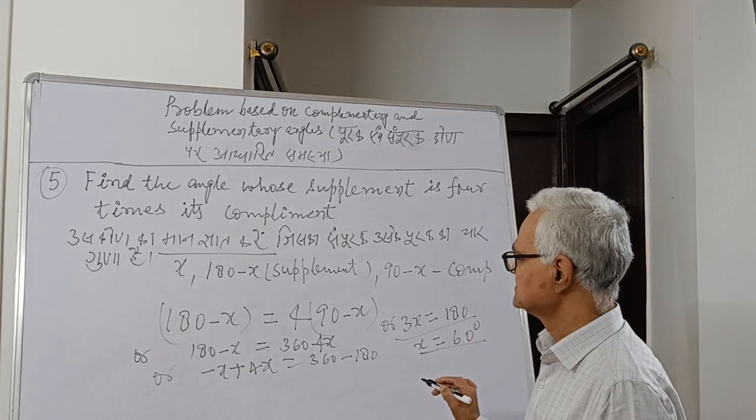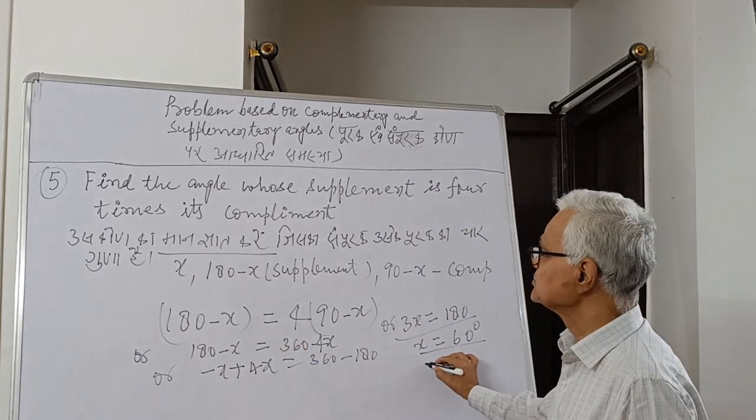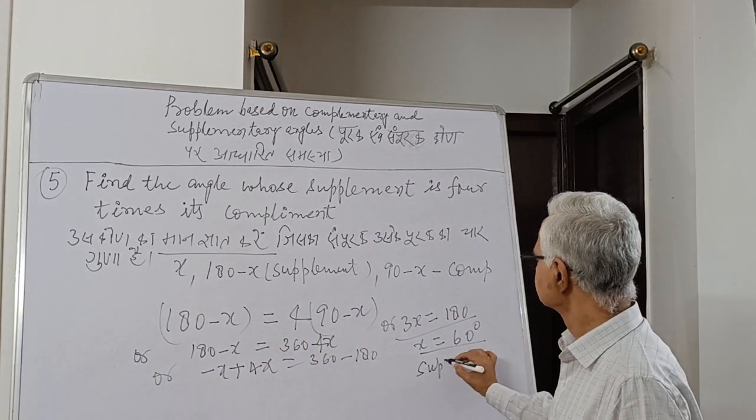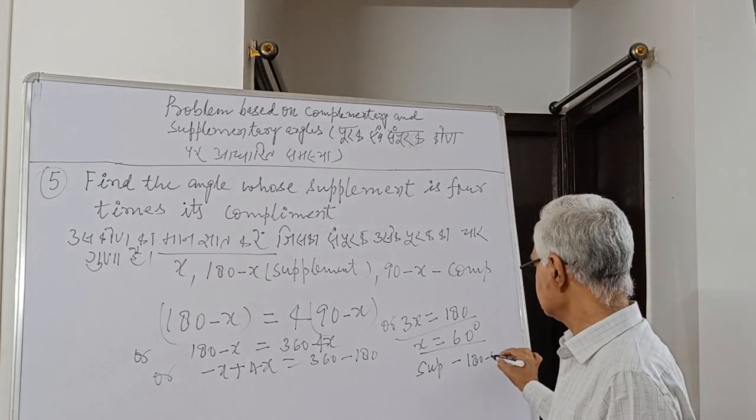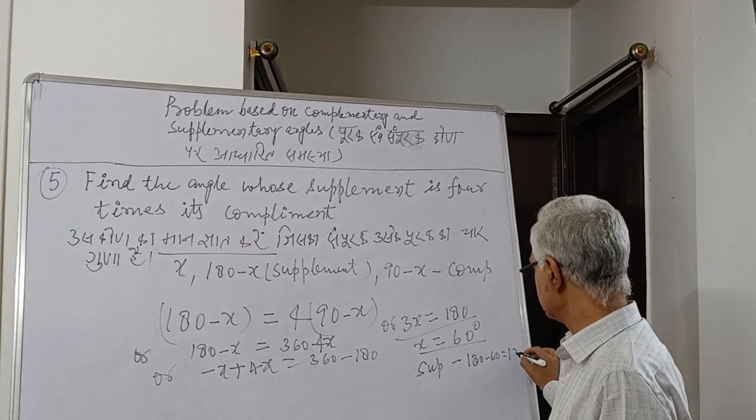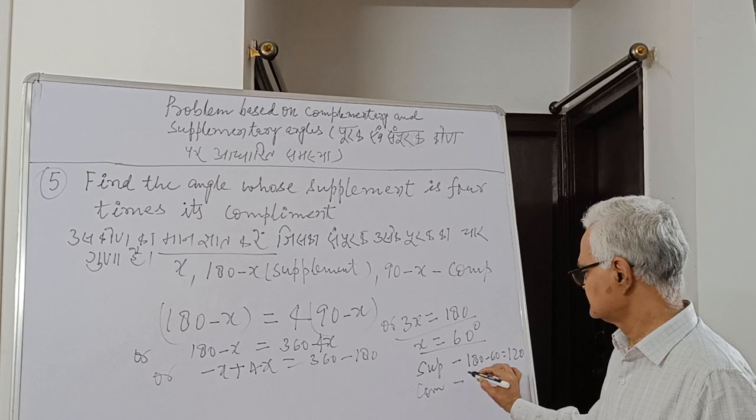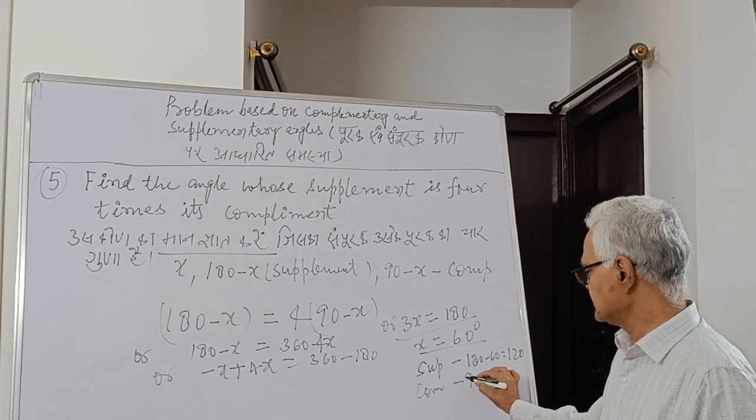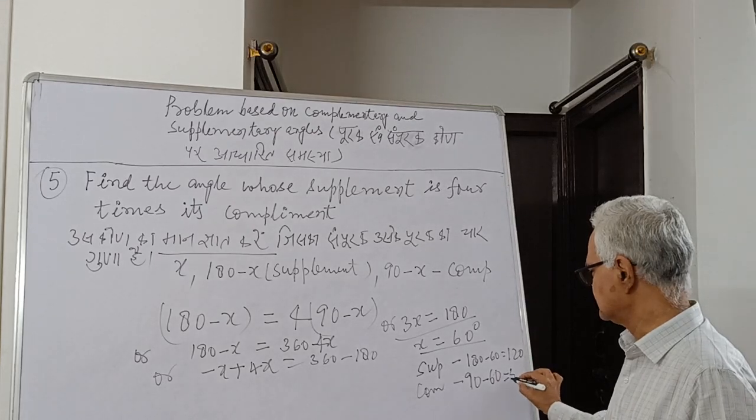So its supplement will be 180 minus 60, which equals 120 degrees. Similarly, its complement will be 90 minus 60, which equals 30 degrees.